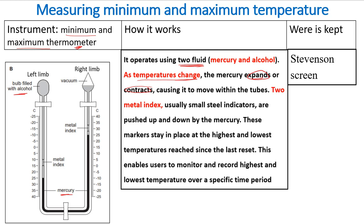Two metal index markers — indicators made of steel — are pushed up and down as the mercury contracts and expands inside the tube. These markers will stay in place at the highest and lowest temperatures reached. The right part of the tube measures the maximum temperature, and the other part measures the minimum. You check where the metal index stops and take your reading. This enables users to monitor and record the highest and lowest temperature over a specific period of time.